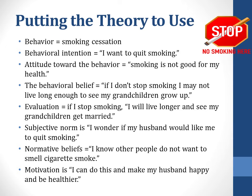The evaluation is: if I stop smoking, I will live longer and see my grandchildren get married. The subjective norm is: I wonder if my husband would like me to quit smoking. The normative beliefs are: I know other people do not want to smell cigarette smoke on me. The motivation is: I can do this and make my husband happy and be healthier.